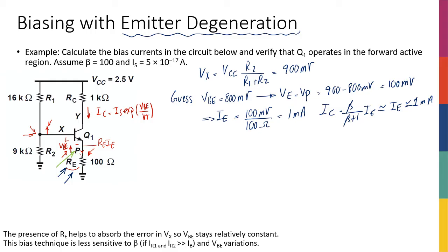Now that I have IC and IB, I can go back and check if my VBE was correct. So my VBE is VT ln of IC over IS. If I do the math, I'm going to find 796 millivolts, which is pretty close to that 800 millivolts that I started with, so I really don't need to re-iterate.